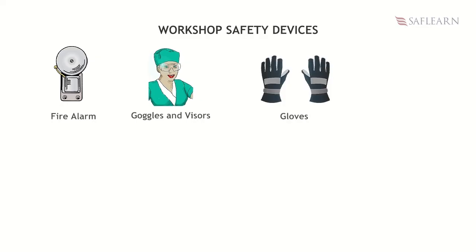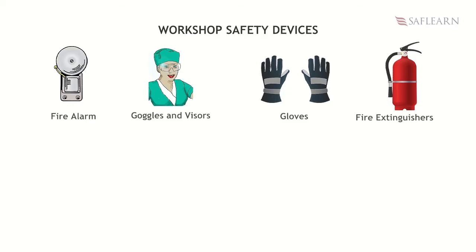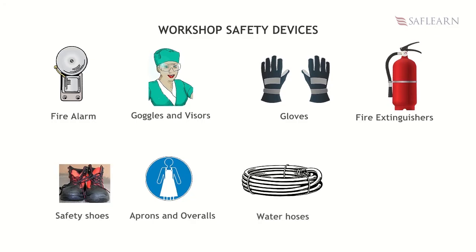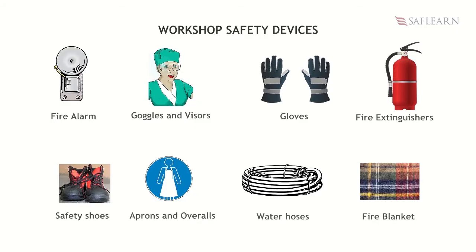Gloves protect the hands against corrosive metals, burns, cuts, electric shock, etc. Fire extinguishers, sand buckets, and sand are used to fight and control fire outbreaks; they are kept in strategic positions in the workshops or buildings. Special workshop shoes made of thick soles and metal caps are used for foot protection. Aprons and overalls protect inner clothes from dirt. Water hoses are pipes used to provide water for cooling and putting off fire. A fire blanket is a material which is used to cover and put off fire.